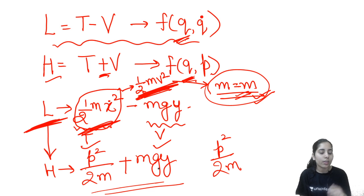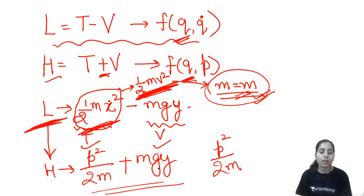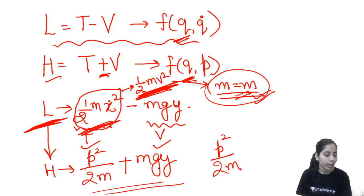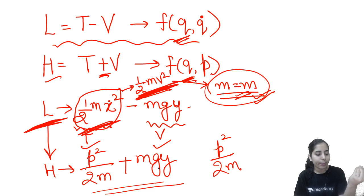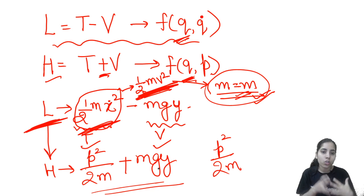That was the first trick. Now the second trick. You will practice more questions based on these tricks using previous year questions to get a clear idea. Let's talk about the second trick. If the Lagrangian is given and you need to find which quantity is conserved or a constant of motion, there is a very simple and easy trick to get the answer quickly.